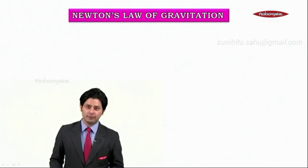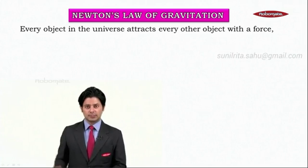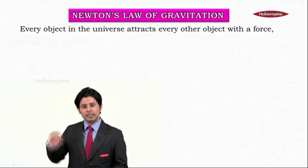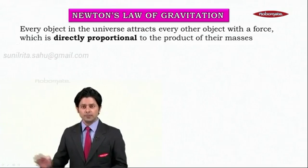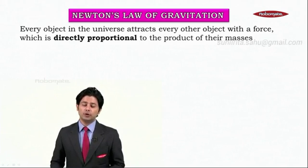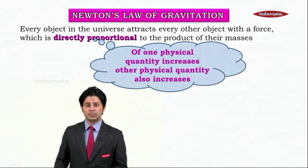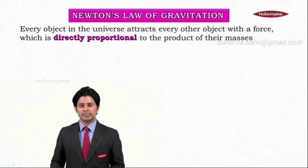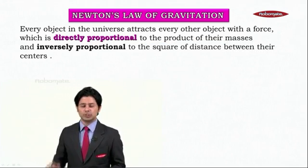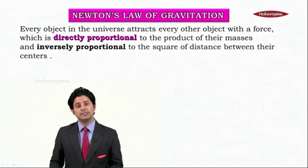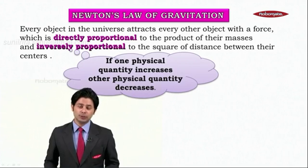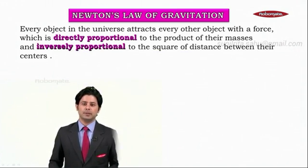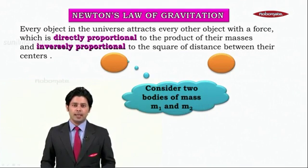Newton's law of gravitation states: every object in the universe attracts every other object with a force. The nature of this force is attraction. This force is directly proportional to the product of their masses — meaning if one quantity increases, the other increases in proportion. It is also inversely proportional to the square of the distance between their centers — meaning if one quantity increases, the other decreases in proportion.